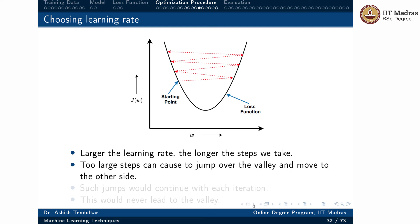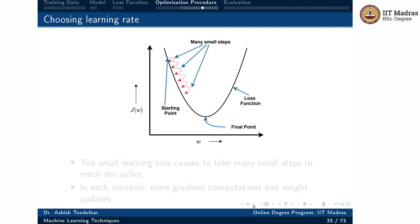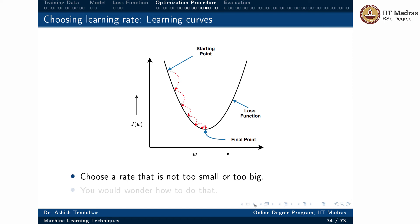You might think that with a larger learning rate we will reach the valley or optimal point faster, but that need not be the case. If the learning rate is too large, we may jump over the valley, go to the other side, and eventually diverge — moving far away from the optimal values, never reaching the valley. Too small a learning rate also does not help: we will reach the valley, but it will take a very long time, as we take many small steps. We need a learning rate that is neither too small nor too large.